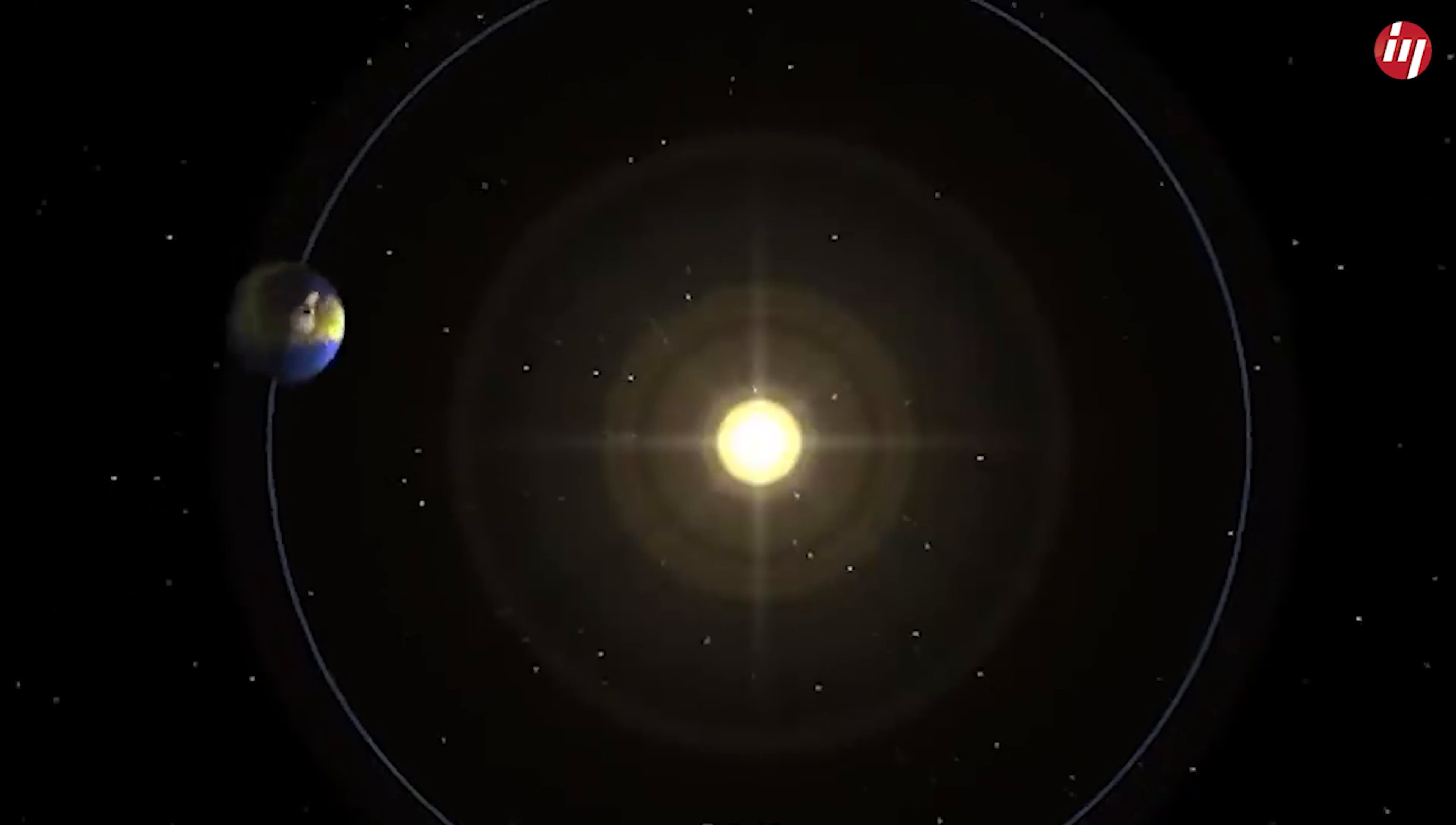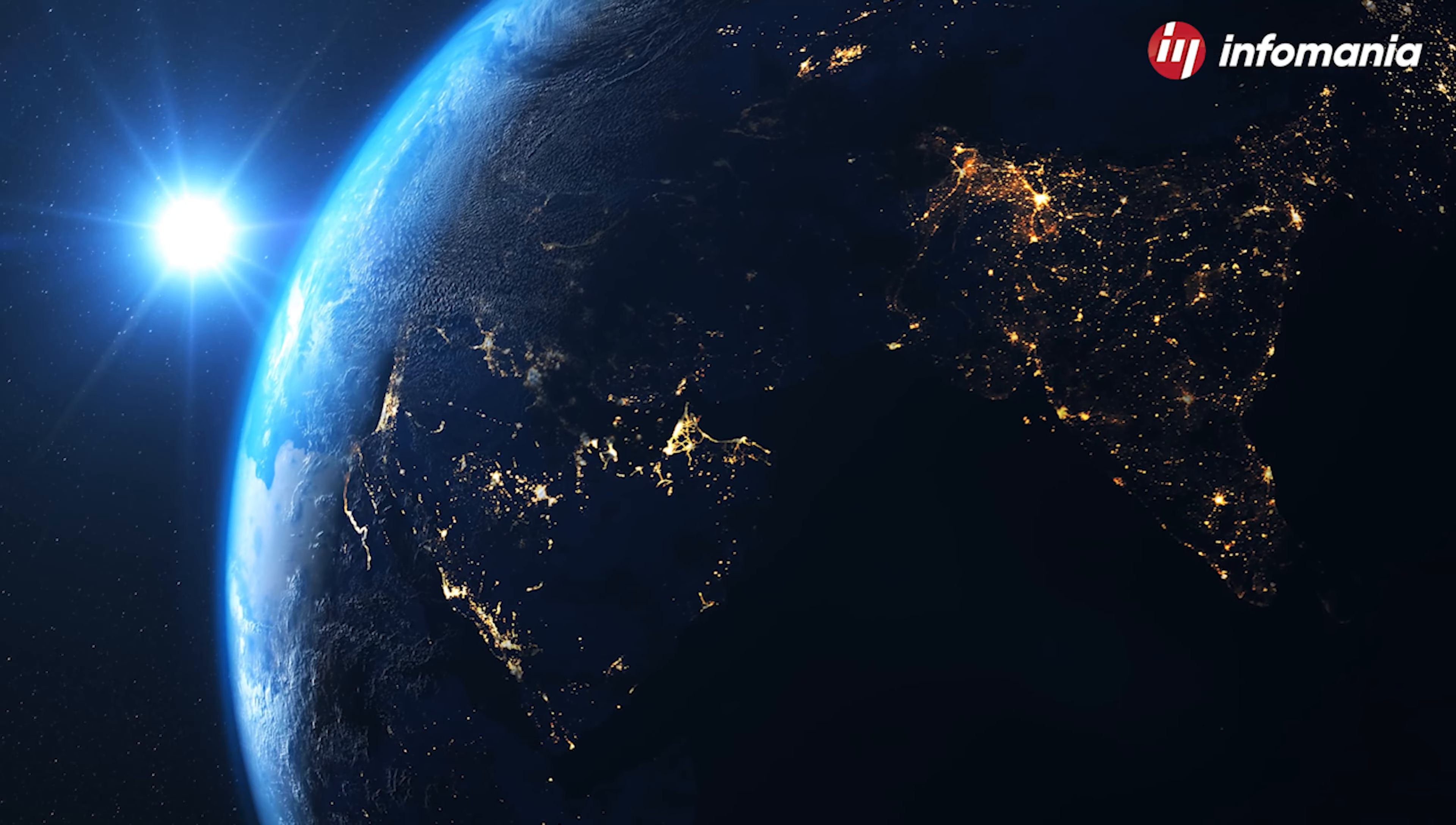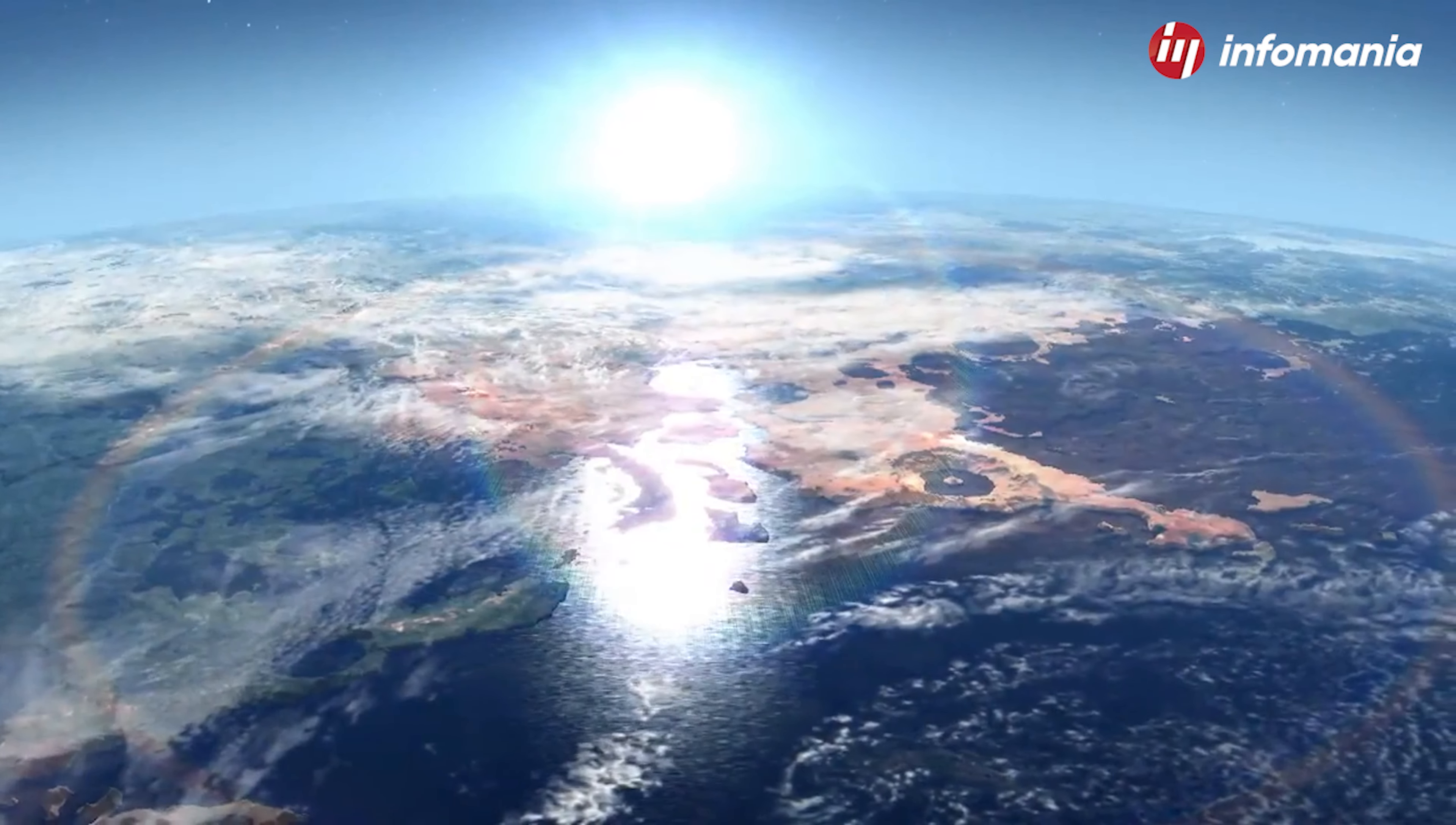As school children, we learn that the earth is moving around the sun in a circular orbit. It rotates once every 23 hours, 56 minutes. Thus, the surface of the earth at the equator moves at a speed of 1000 miles per hour, giving us night and day, tackling wind, tides, and temperature.